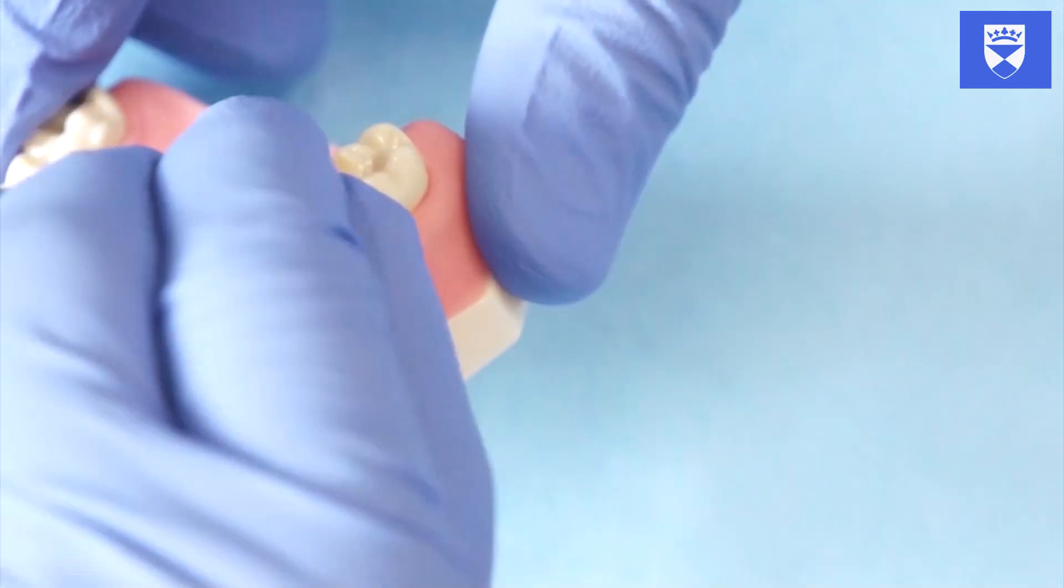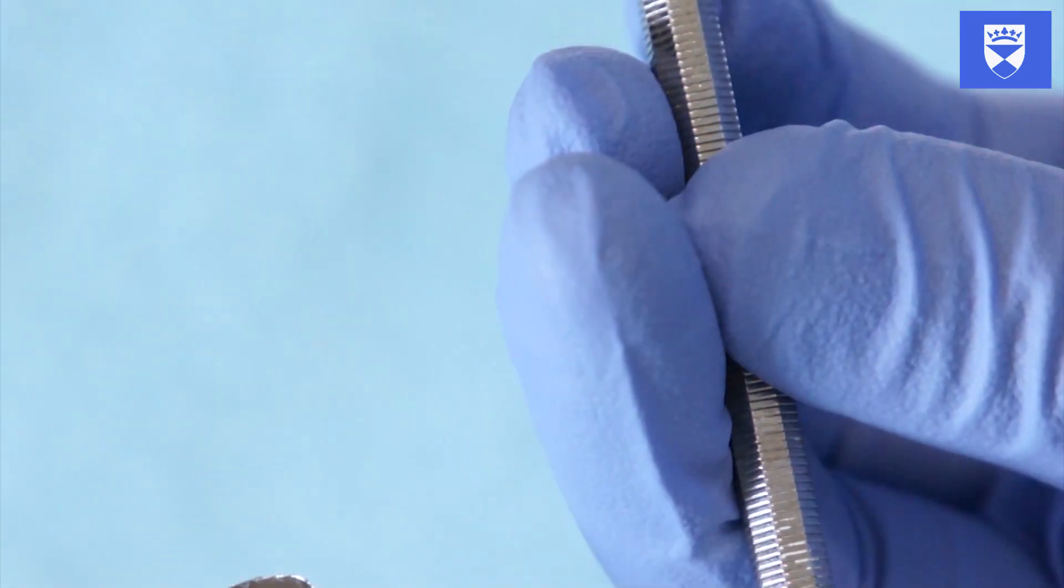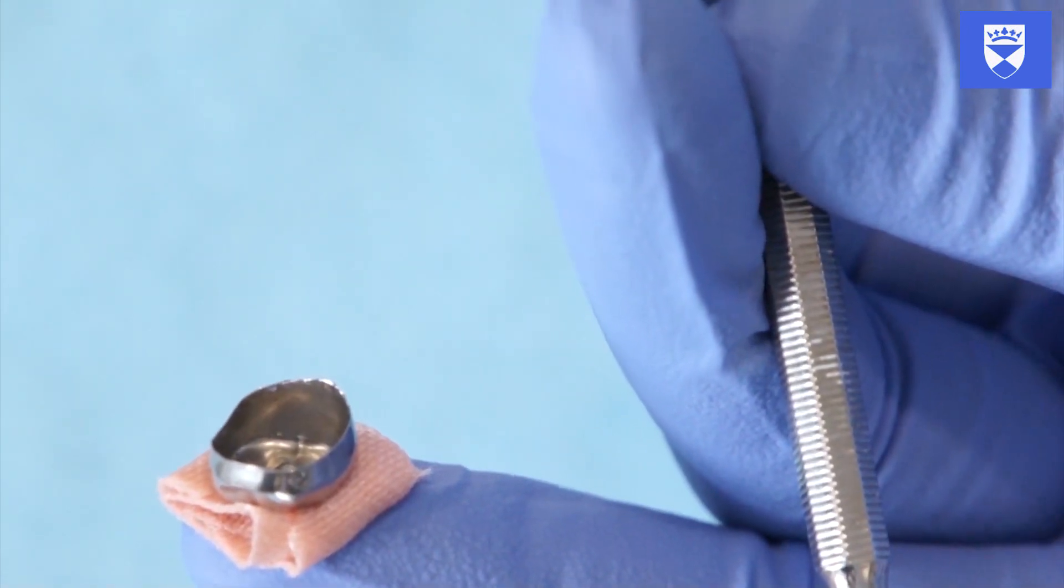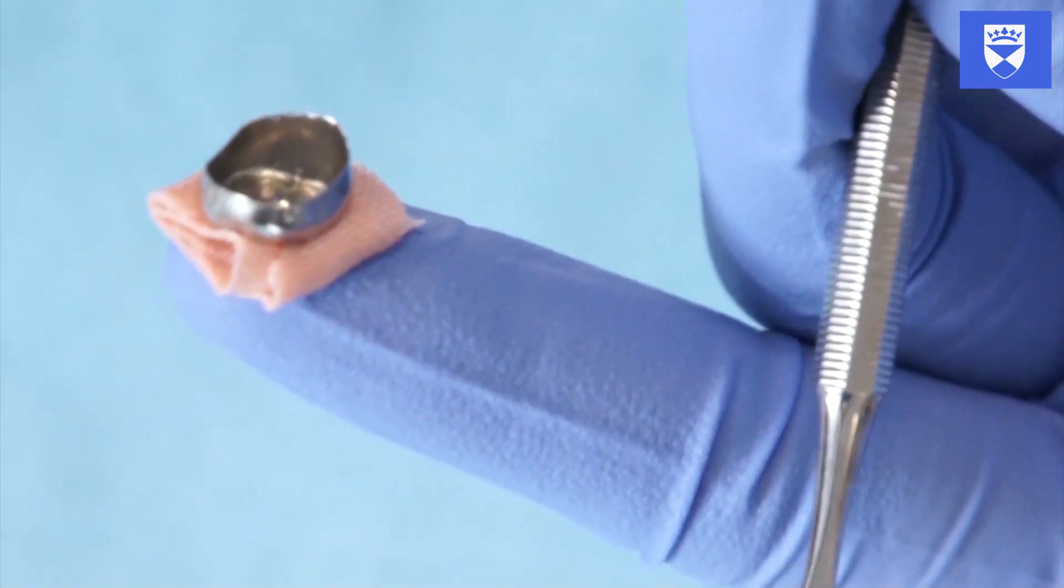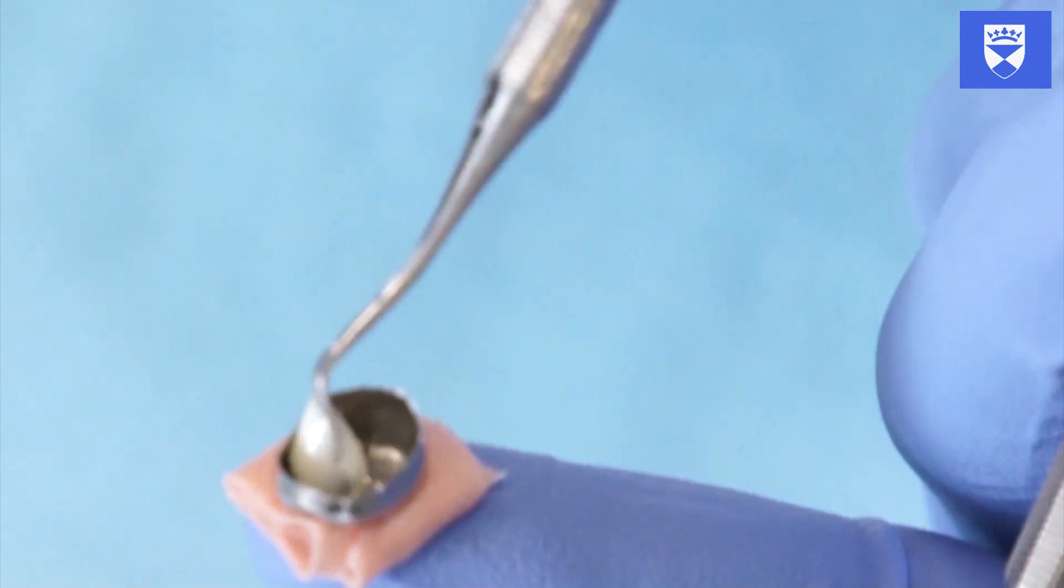Load the crown with a glass ionomer luting cement. This should be loaded to at least one third of its capacity. Use a flat plastic to ensure that the internal surface is completely covered by the cement.